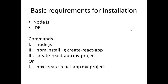For installation, you first need Node.js installed on your system. Then run: `npm install -g create-react-app`. Next, execute: `create-react-app <your-project-name>`. Alternatively, you can use: `npx create-react-app my-project`, where 'my-project' is the project name — you can give it any name you want.